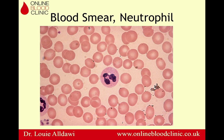Before we start talking about neutrophils, we need to give some background about staining. Why do red blood cells stain red and the nucleus of all white blood cells stain blue? The Giemsa stain is the most widely used stain. It has eosin which stains basic materials red, and it has methylene blue which stains acidic material blue. The nucleus of white blood cells contains lots of nucleic acids, making it acidic, and therefore it stains blue.